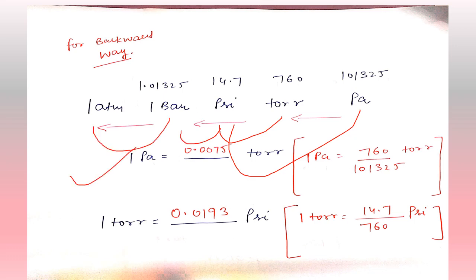Taking 1 pascal and converting into torr. We simply divide 760 by 101325, giving us 1 pascal equals 0.0075 torr.